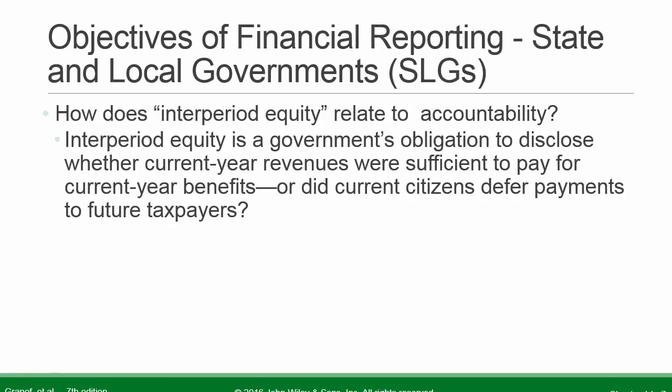So how does interperiod equity relate to accountability? Interperiod equity is a government's obligation to disclose whether current year revenues were sufficient to pay for current year benefits, or whether current citizens deferred payments to future taxpayers.